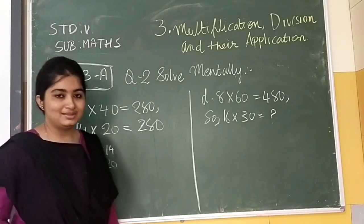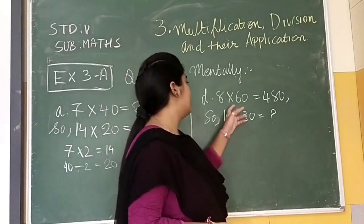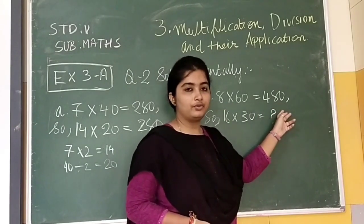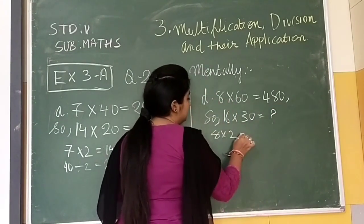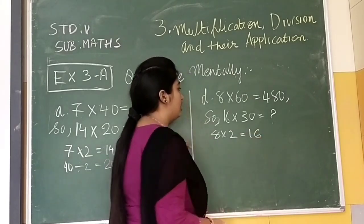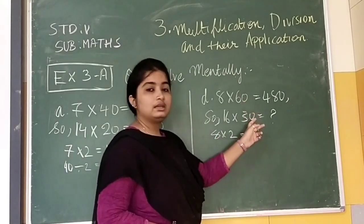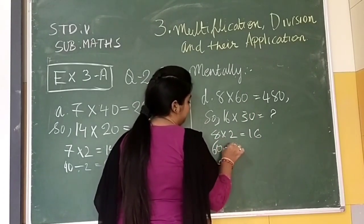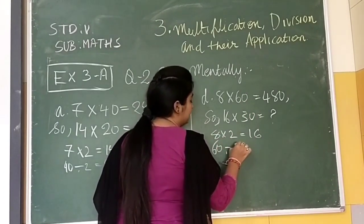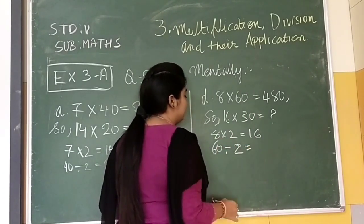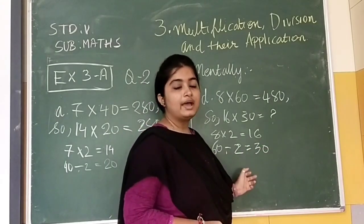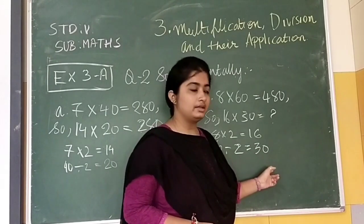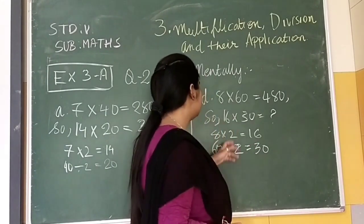That is the strategy of this sum. Here we can see that 8 into 60 we have given. 8 into 2, that is 16. And you know that 60 divided by 2, that is 30.